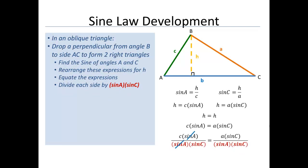So on the left-hand side, we see that the sine A cancels out, and on the right-hand side, we see that sine C cancels out. And we're left with the ratio that side C over sine of angle C is equal to side A over sine of angle A.